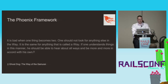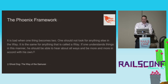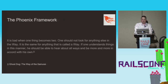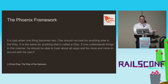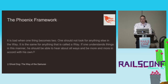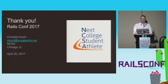Let me leave you with a quote from the Jim Jarmusch film Ghost Dog: Way of the Samurai: 'It's the same for anything that's called a way. If one understands things in this manner, he should be able to hear about all ways and be more and more in accord with his own.' I hope I've helped you understand the Phoenix framework a bit better. I'm not advocating abandoning Rails — Phoenix is a different tool in our toolbox that may be more suited to some problems than others. As Rails or Elixir programmers, there's a lot of benefit in exploring different technologies, not just because they provide a different way of doing things, but because different methods can reflect back on how you've done things and reveal new aspects of what you've been doing all along. Thank you.